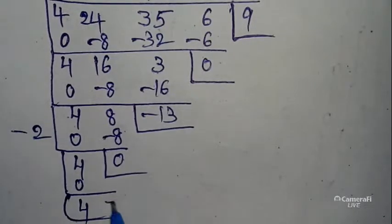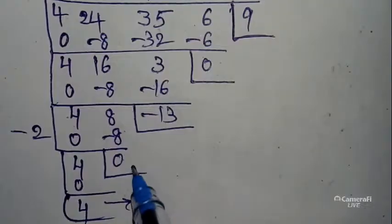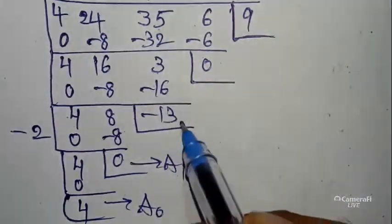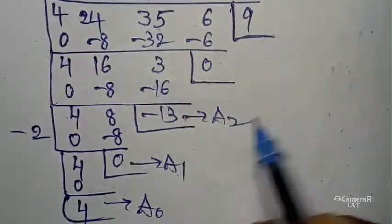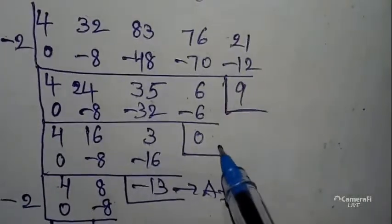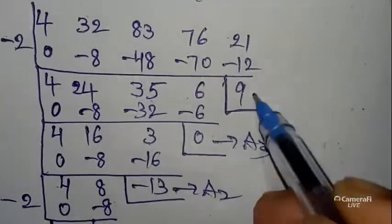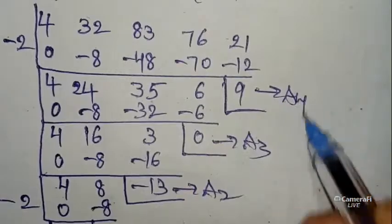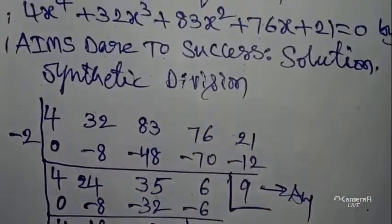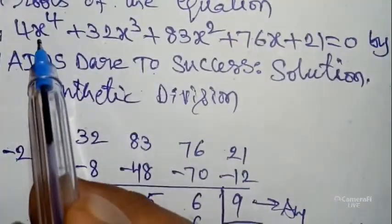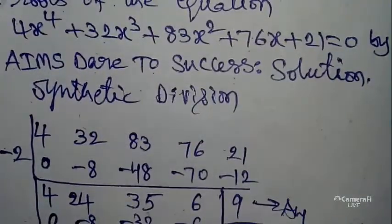We are not writing one more value because we are not having a value here, so leave like this. Take A₀ and A₁, next one is A₂, next A₃, and next A₄.